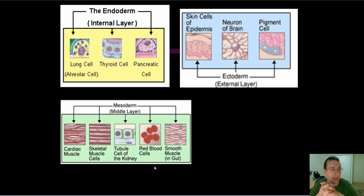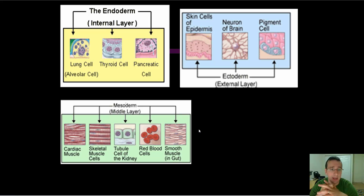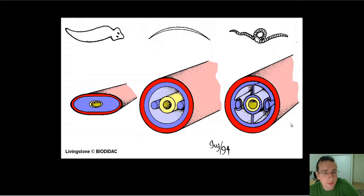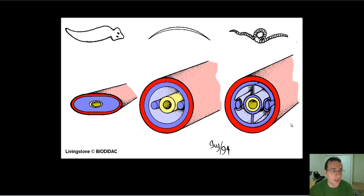The tissue layers determine the types of cells which come from each layer. The internal layers form things like lung cells, thyroid cells, pancreatic cells — the organs on the inside of your body. The mesoderm cells will form things like muscle, cells of the kidney, red blood cells, and smooth muscle cells. The ectoderm will form things like the skin and neuron cells. Another important concept is that some animal groups will have internal cavities, while others will not, and others will have what we call pseudocavities.